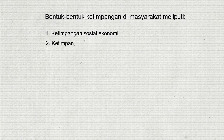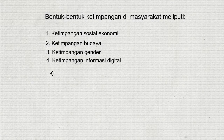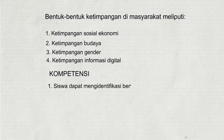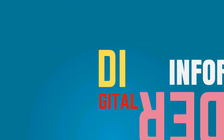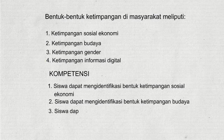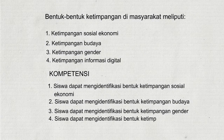Bentuk-bentuk ketimpangan di masyarakat meliputi: 1. Ketimpangan sosial ekonomi, 2. Ketimpangan budaya, 3. Ketimpangan gender, 4. Ketimpangan informasi digital. Kompetensi: siswa dapat mengidentifikasi bentuk ketimpangan sosial ekonomi, ketimpangan budaya, ketimpangan gender, dan ketimpangan informasi digital.